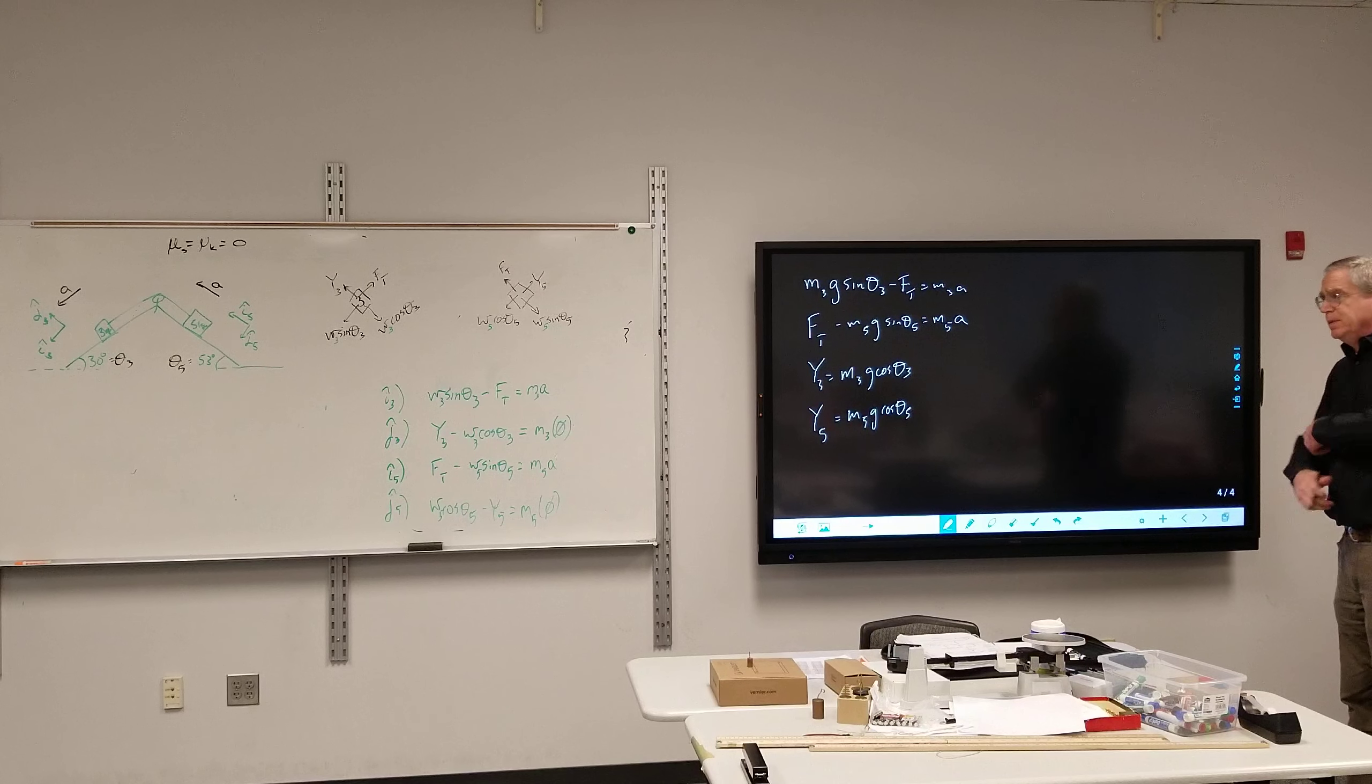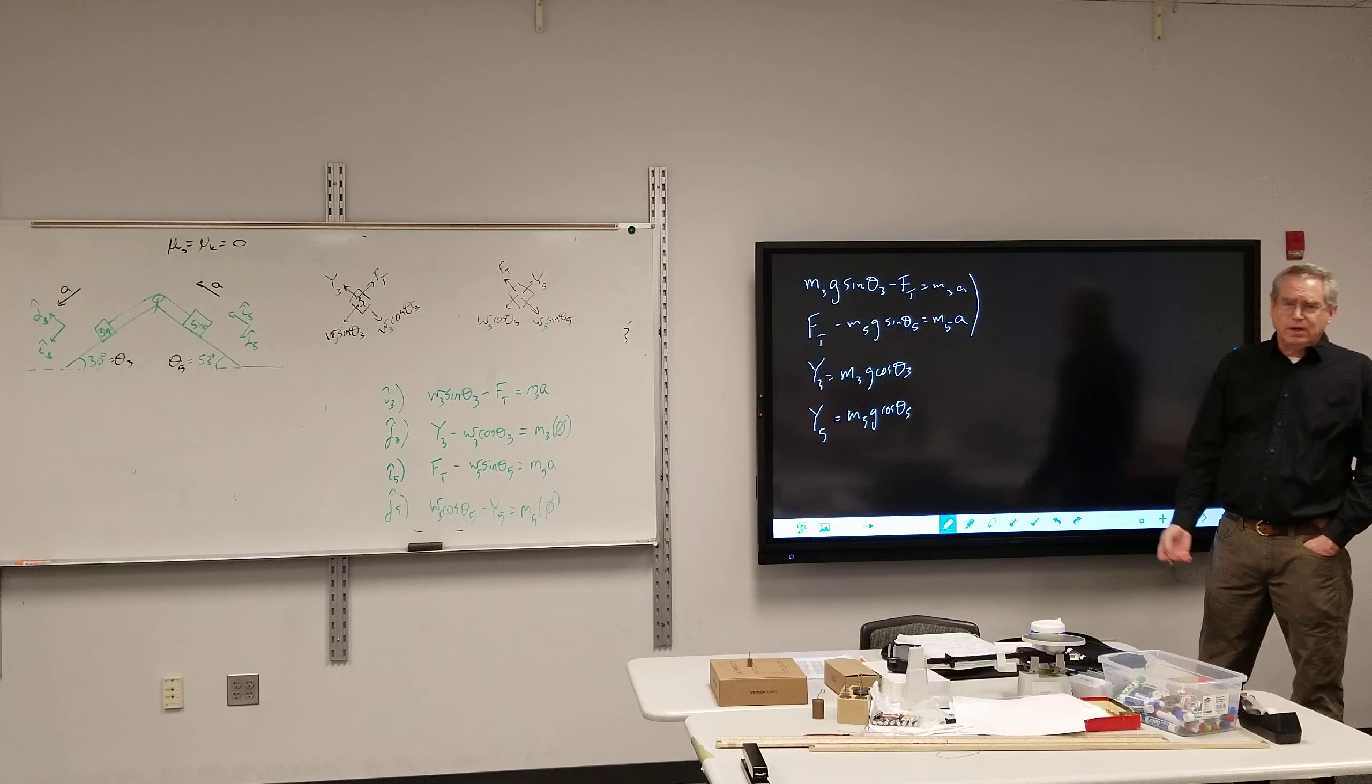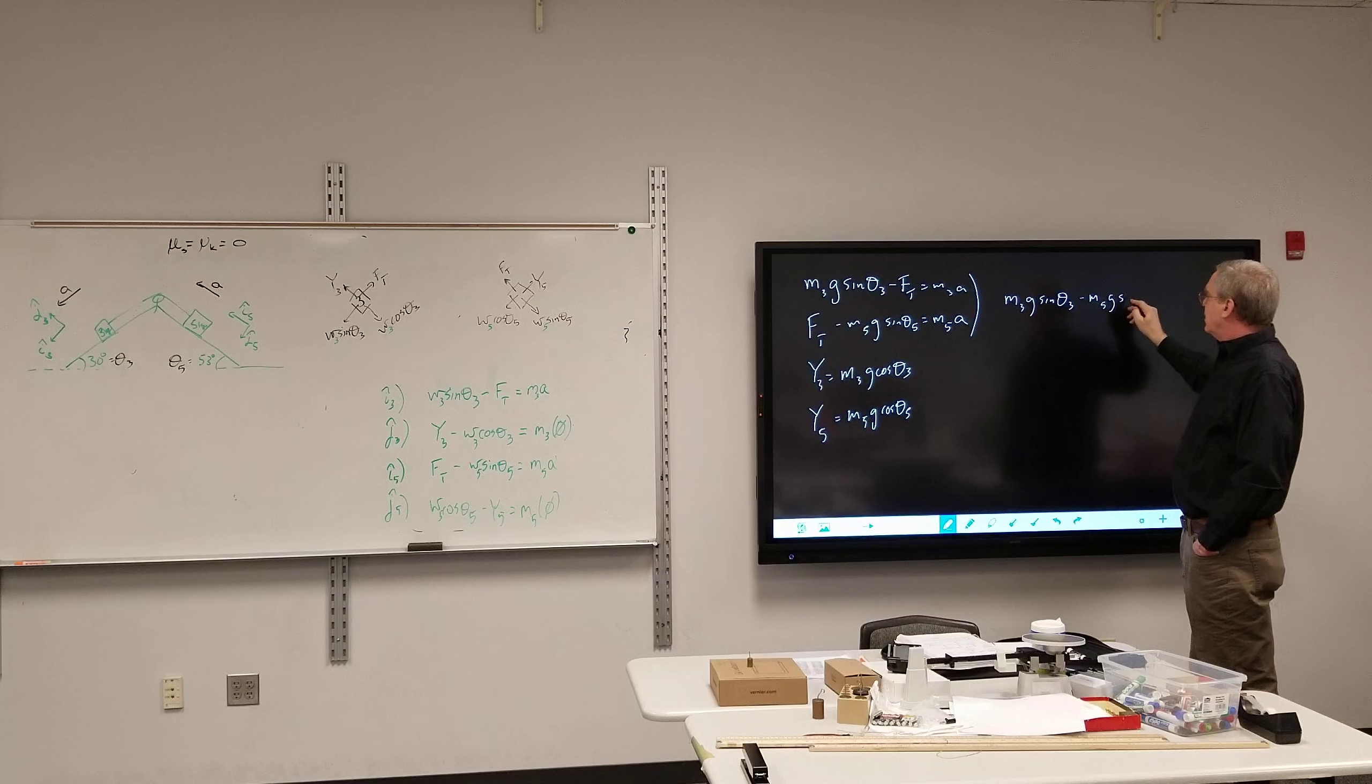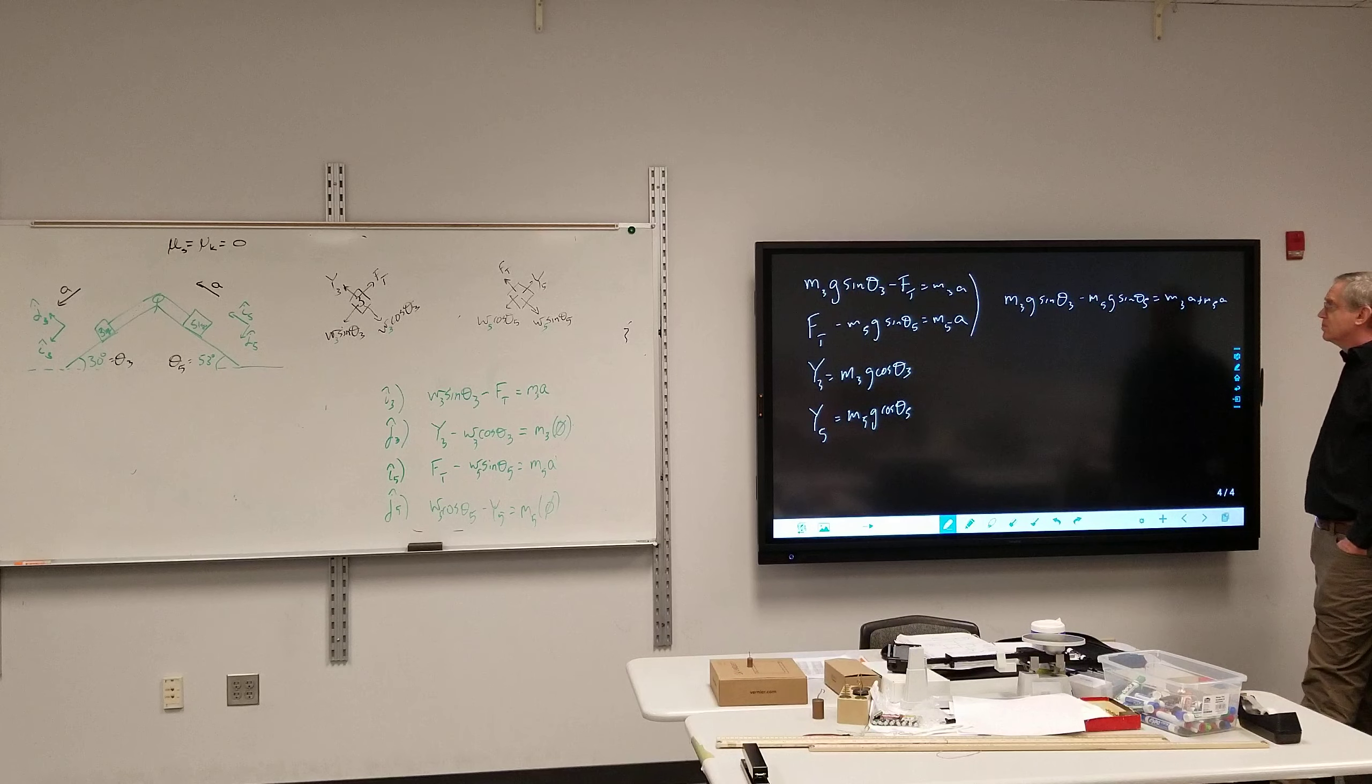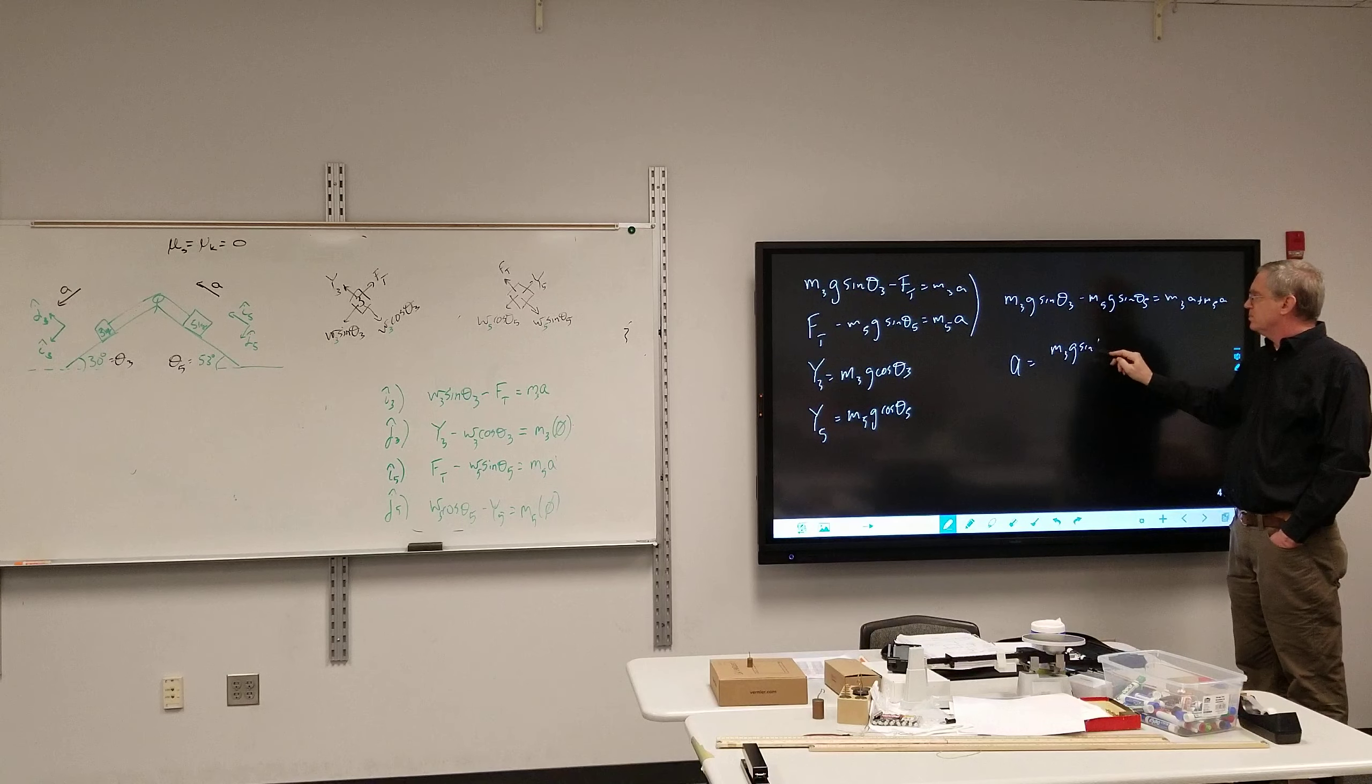All right, now substitution. Hopefully, at this point, all of you are comfortable enough with the formula for weight. Yes. So I got M three G sine theta three minus tension is equal to M three A. And I have tension going to the third equation minus M five G sine theta five is equal to M five A. The other two equations are not going to have any play here. You can make the substitution if you wanted to, so I got Y three equals M three G cosine theta three, and Y five is equal to M five G cosine theta five, but without friction, the normal force does not have to play in this particular role.